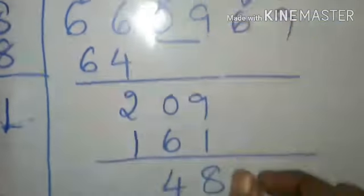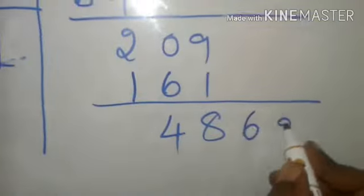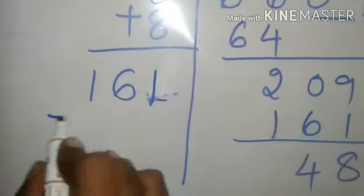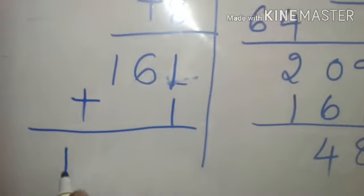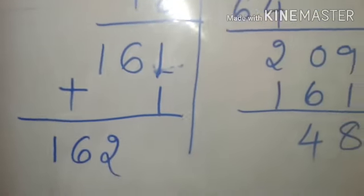The next pair has to be taken down. So next pair is 69. So I am going to take this 69 down. And then what's the procedure? Double the last digit. So it is 161 plus 1 is 162.